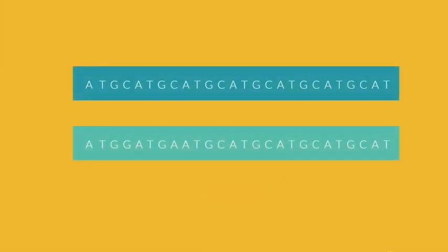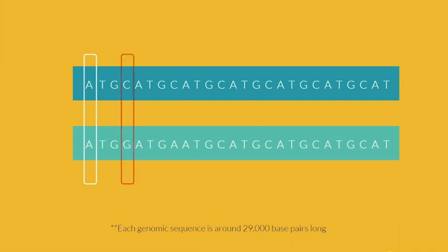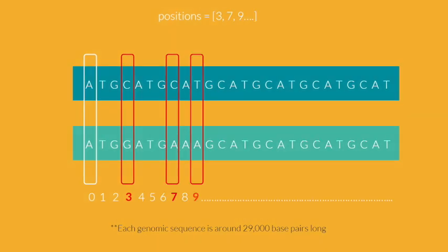The program iterates through the 29,000 plus base sequences until one of the bases at a specific location are found to be different. The program then saves that position into an array, which grows larger as more bases are compared to one another and are found to not be the same.